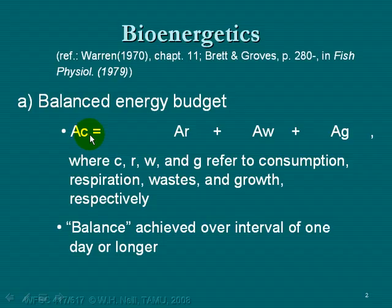This is where we get the oxygen and the substrates together, do energy and mass balance, and decide whether the fish is gaining or losing. The whole idea begins with what we call a balanced energy budget. Brett and Groves published a very influential paper in the series Fish Physiology back in 1979 that represents the touchstone for most folks who work in bioenergetics with fish. The whole idea starts with the notion that what goes in has to equal what goes out plus whatever change there is in the system.